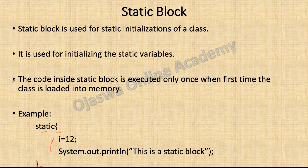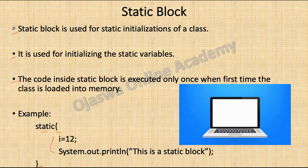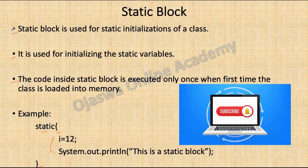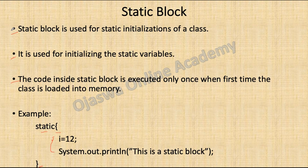How is a static block executed? The code inside a static block is executed only once when the class is first loaded into memory. So the static block is executed even before the main method when class loading happens. You may use a static block to initialize static variables, to display some instructions related to your application, or to do anything that needs to be executed before the main method, depending upon your requirement.